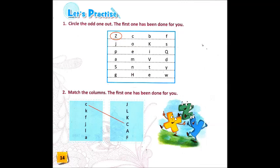So children, in the lines where one letter looks different, like one capital letter among small letters, that is the odd one. You have to find it and circle it.